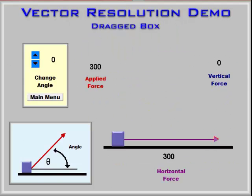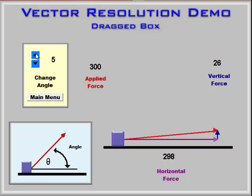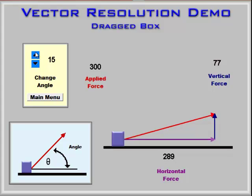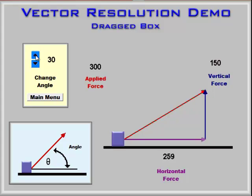Starting with the drag box — here is our box. You can see it's being dragged by a force vector, and we can change the angle. The applied force is 300, and as we change the angle, the 300 that is in the horizontal direction to start will slowly change and be broken down into the x and y, or the vertical and horizontal components.